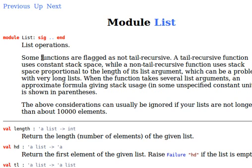Now, we have list operations. Some functions are flagged as not tail recursive — a tail recursive function uses constant stack space, while a non-tail recursive function uses stack space proportional to the length of its list argument, which can be a problem with very long lists. If you remember how recursion works, we loop through the stack, compute the value, and then go in the opposite direction to pop the stack and retrieve the value. For tail recursive functions, we carry the result with us every time we recurse, so we don't have to pop the stack and go the opposite direction.